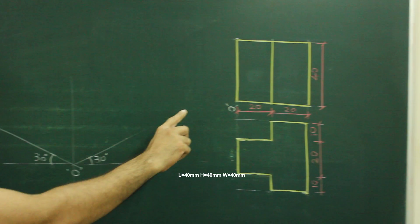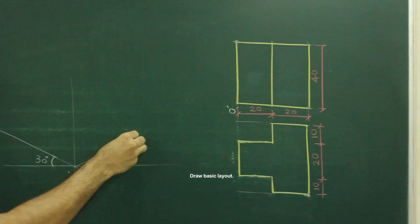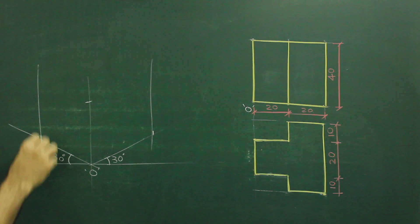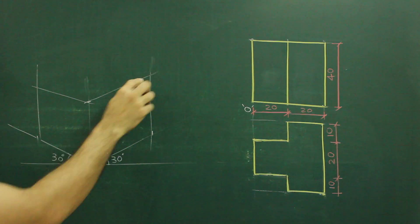In this sum, length is 40, height is 40, and width is 40. So first we will draw a layout. We will mark 40, 40, 40. Draw vertical line and draw parallel lines at 30 degrees.